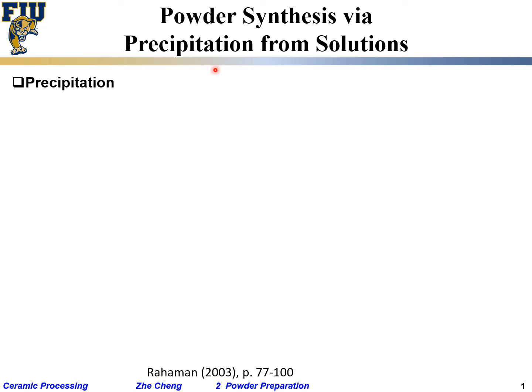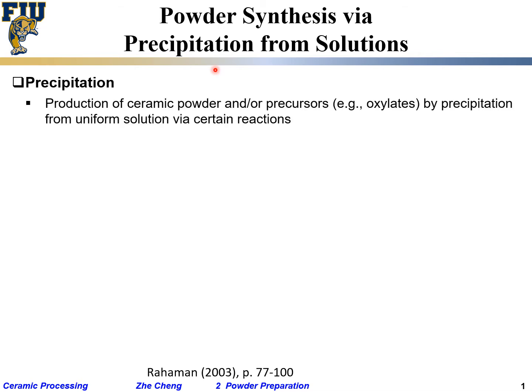Other than the simple solid state reaction (SSR), there are many other different ways to synthesize ceramic material. One of them is called precipitation. Sometimes you can precipitate directly from solution what you want; sometimes after precipitation it has to go through some type of solid state reaction to get your final product. Precipitation is the production of ceramic powder or ceramic precursor powder material by something coming out from a uniform solution via a chemical reaction, and it's typically homogeneous nucleation in most cases.